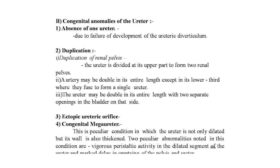The third type is the ectopic ureteric orifice. This condition occurs when a second ureteric diverticulum comes out from the mesonephric duct later than usual and lower than the usual position.